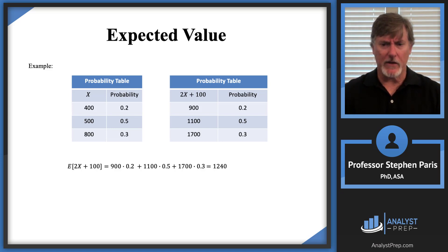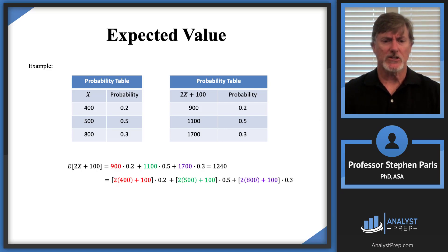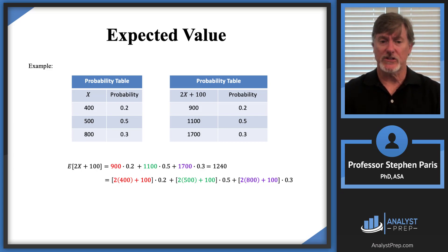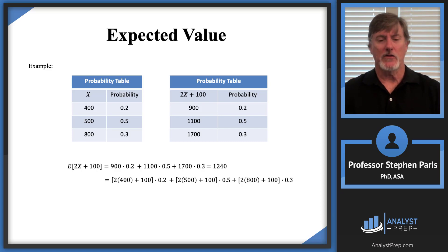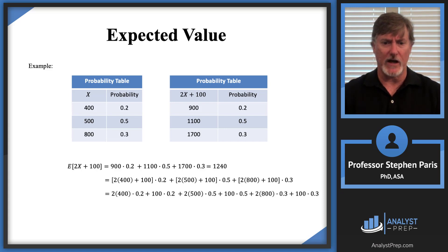Let's break down the calculation a little more using some colors. The 900 came from 2 times 400 plus 100, and likewise you can see where 1100 and 1700 came from.